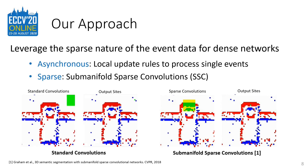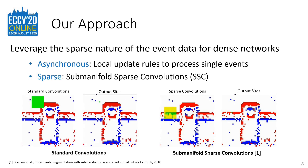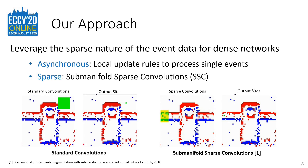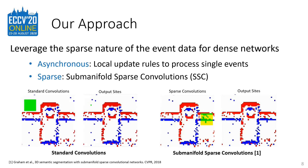On the bottom left, you can see the operation principle of standard convolutions. They generate an output for each pixel in the image by computing the kernel-weighted sum over the full receptive field, visualized as a green square. In contrast, sparse convolutions only generate an output at pixels with a non-zero input vector, also called active sites. Additionally, they ignore input pixels in the receptive field which have a zero vector, thus only focusing on active sites visualized in green. Therefore, submanifold sparse convolutions can leverage the sparsity of event data, leading to a drastic reduction in computational complexity compared to standard convolutions.